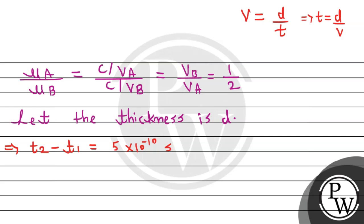T2 we can write as distance D divided by velocity VB. Minus T1 we can write as distance divided by velocity VA. This is equal to 5 into 10 to the power minus 10.